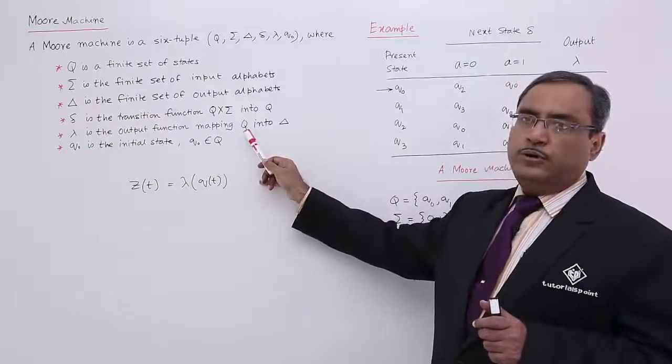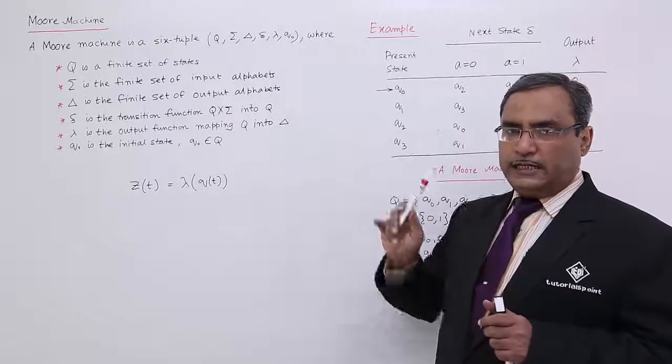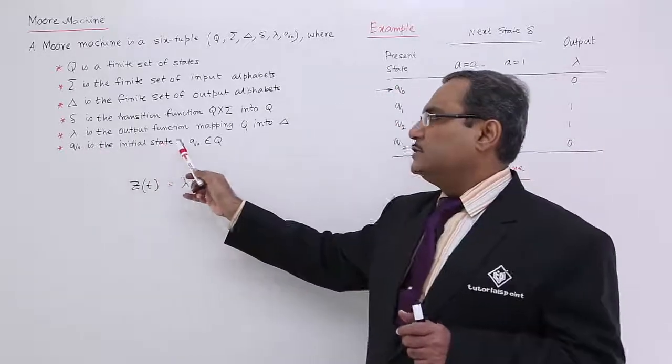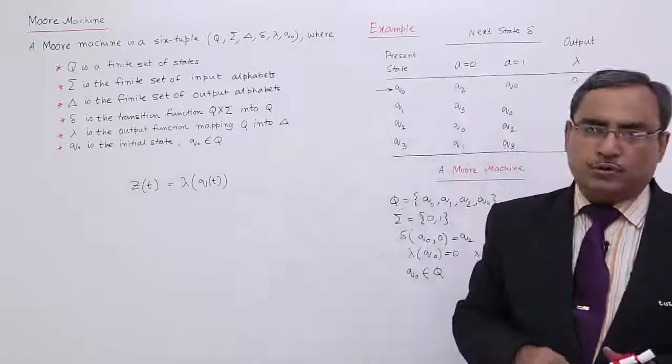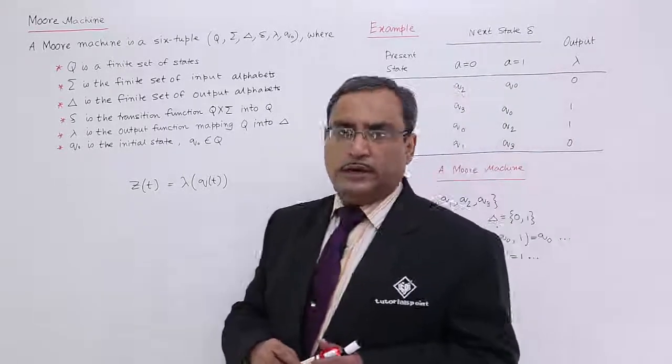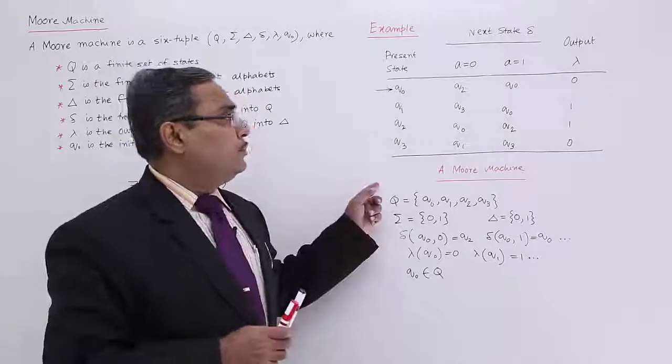Depending upon the state, we are going to get the output irrespective of the current input. Q0 is the initial state and Q0 belongs to capital Q. Now, let me go for one example that will make our conception more clear. Please consider this Moore machine.